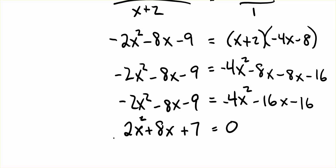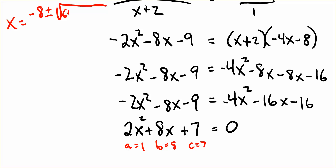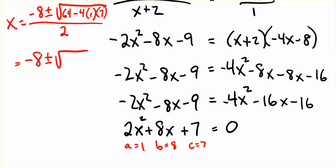We look for two numbers that multiply to give 14 and add to give 8 — that doesn't appear to work, so we can't factor. Instead, we use the quadratic formula. Here a equals 2, b equals 8, c equals 7. So x equals negative b plus or minus the square root of b squared — 64 — minus 4 times 1 times 7, all divided by 2a which is 2.